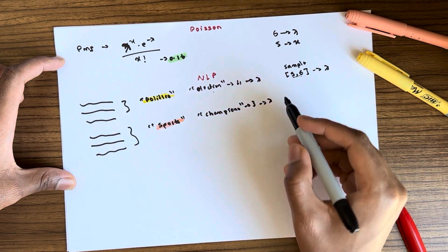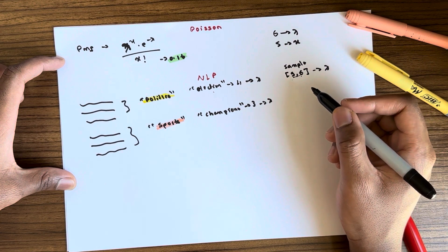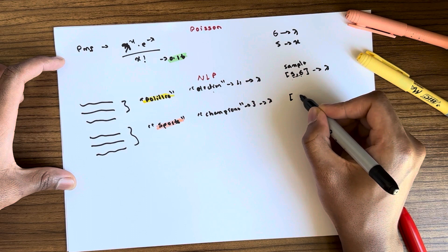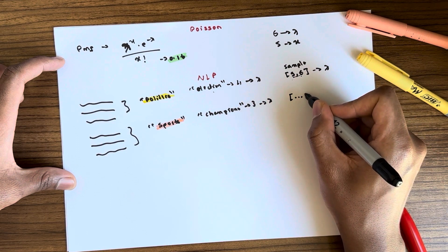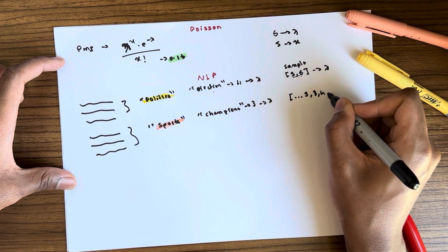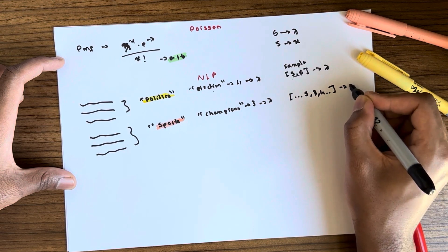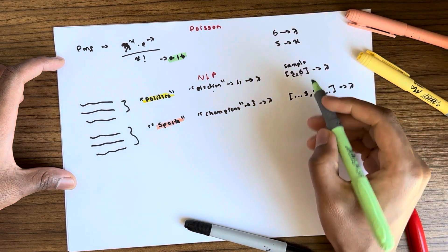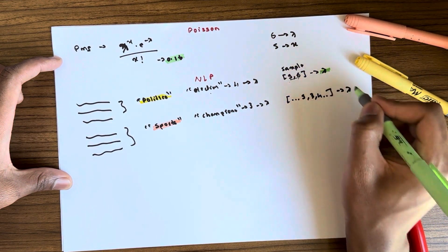Similarly, if you want to generate 100 more synthetically generated data for sports, you can sample 100 more items and you might end up with various values. When you take the average, it is usually approximately lambda — this is actually one of the properties of the distribution itself.